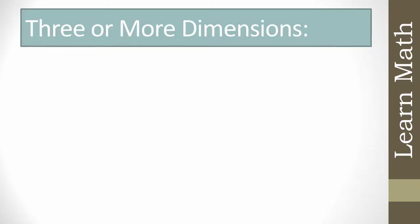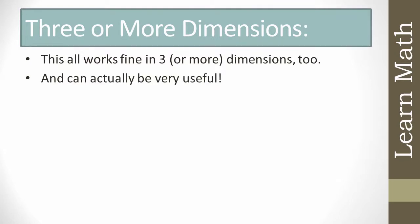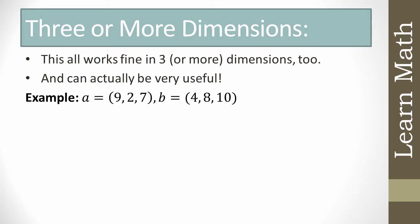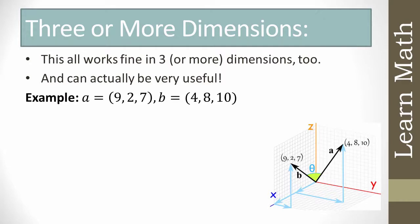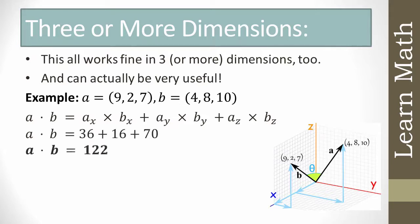This all works fine in three or more dimensions too, and can be very useful. Suppose a = (9, 2, 7) and b = (4, 8, 10). To find a·b, we multiply corresponding components: ax·bx + ay·by + az·bz = 36 + 16 + 70 = 122.